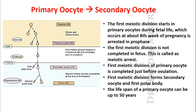The first meiotic division starts in the primary oocyte during fetal life, which occurs at about eight weeks of pregnancy, and it is arrested in prophase. The process of meiosis has been arrested in the prophase - the first meiotic division is not completed in the fetus. This is called meiotic arrest.